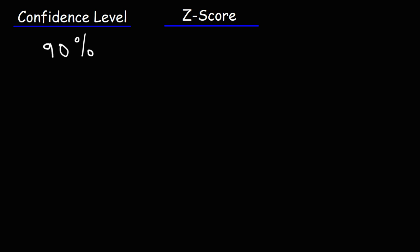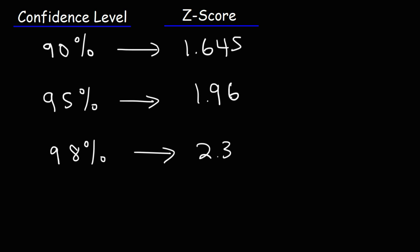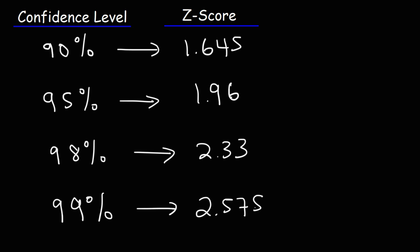In this video we're going to focus on a quick and simple method of finding the z-score given the confidence level. For those of you who want to commit this to memory, here are some common values: a 90% confidence level corresponds to a z-value of 1.645; a 95% confidence level corresponds to a z-value of 1.96; a 98% confidence level corresponds to a z-score of 2.33; and a 99% confidence level corresponds to a z-score of 2.575.